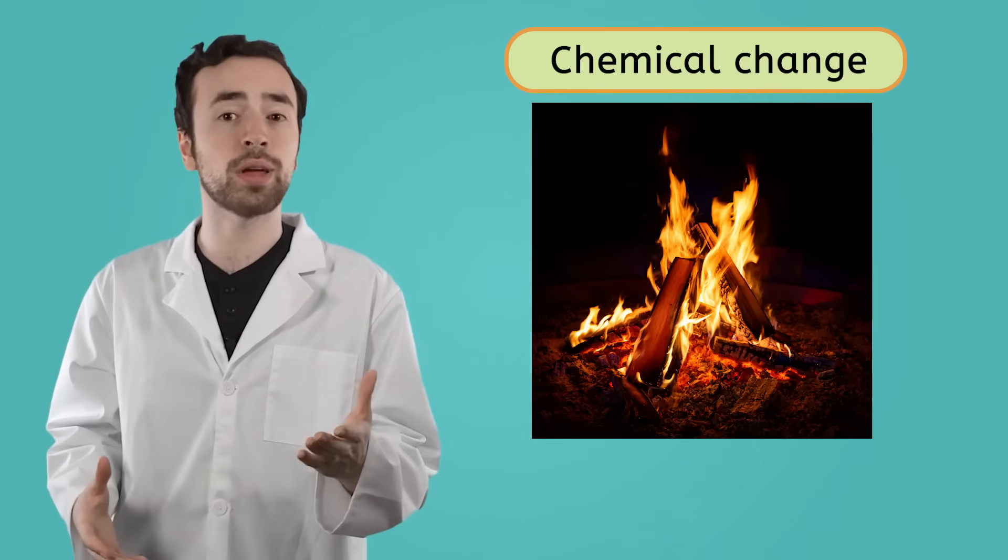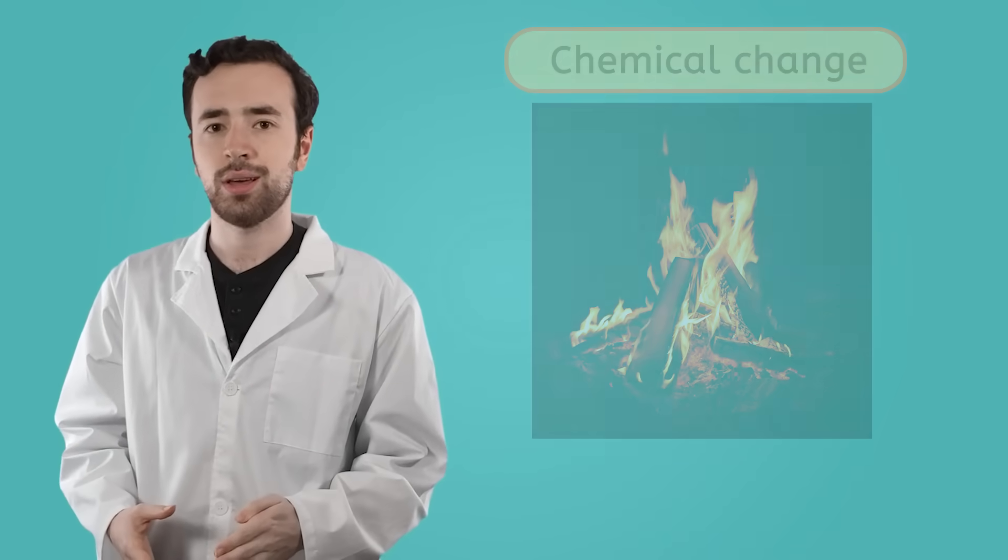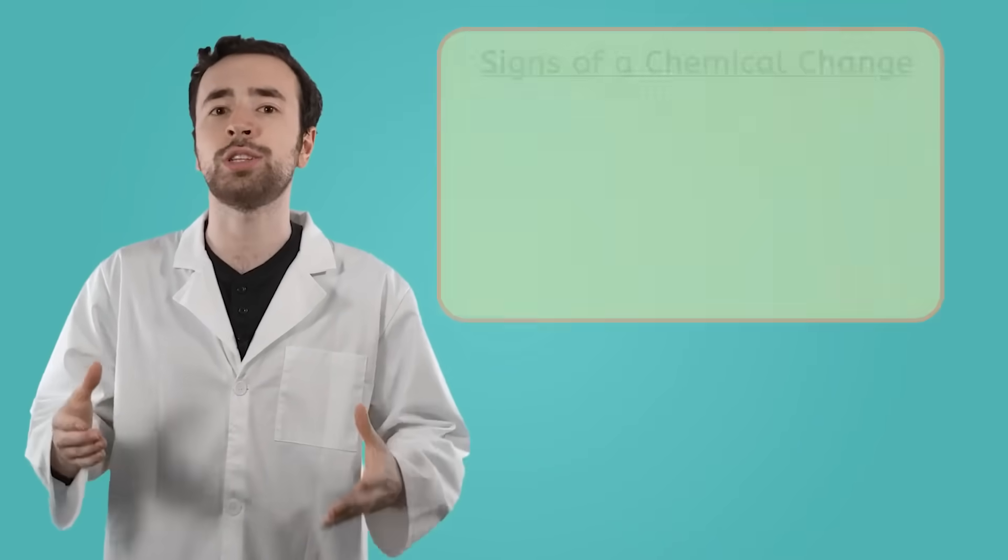Explosions, rust, and burning are all examples of chemical changes. There are actually a few things that we can look out for in order to tell whether or not a chemical change has happened.